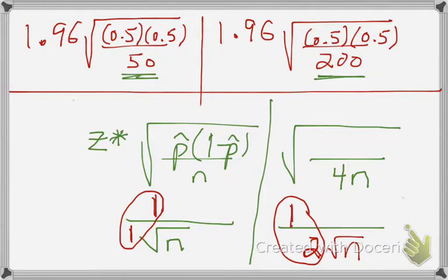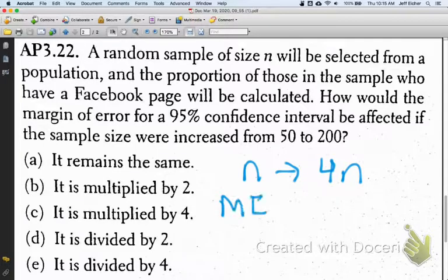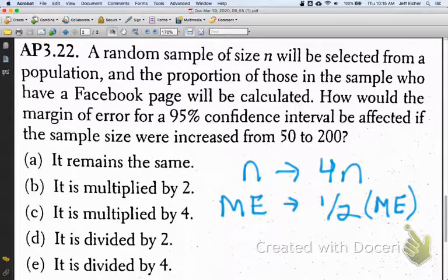Multiplying your sample size by 4 will reduce your margin of error by 1 half. And that's kind of a basic truth: if you have your sample size, which is n, if you quadruple your sample size, then your margin of error will be 1 half of the original margin of error. This is one issue with increasing the sample size to reduce your margin of error. The issue is you'd have to quadruple your sample size to halve your margin of error.